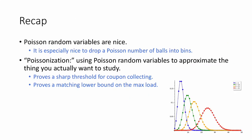So that just about wraps it up for this video. To quickly recap: first, Poisson random variables are nice, and it's especially nice to drop a Poisson number of balls into bins. Second, Poissonization is a useful technique where we use Poisson random variables to approximate the thing we actually want to study. We saw two examples: we used this to prove a sharp threshold for coupon collecting, and we used it to prove a matching lower bound on the maximum load, which matches the upper bound we saw in a previous video.